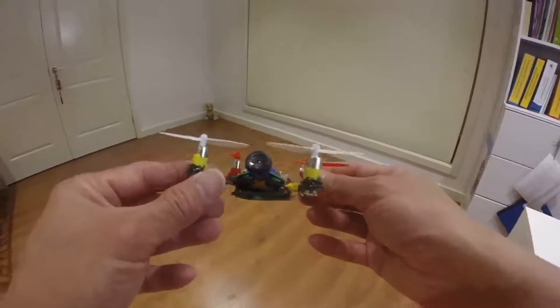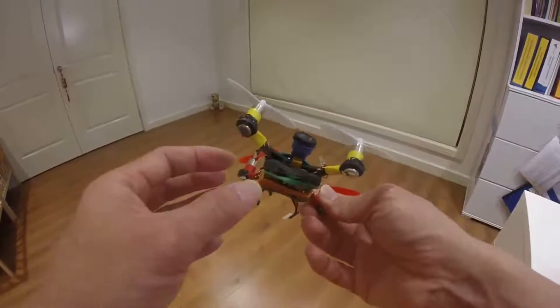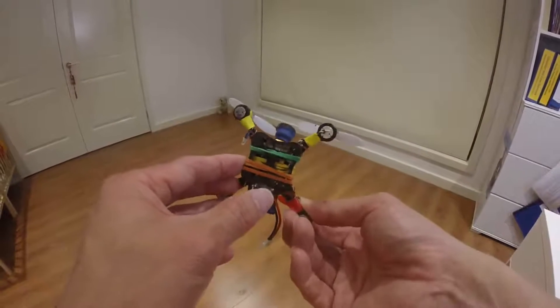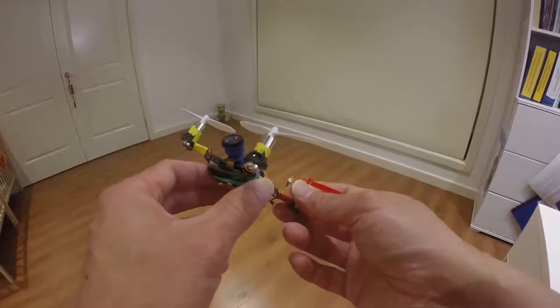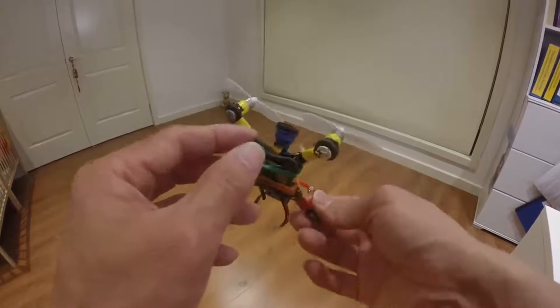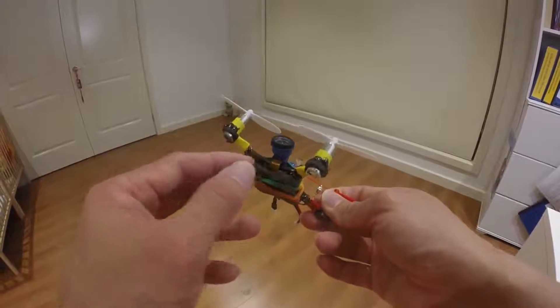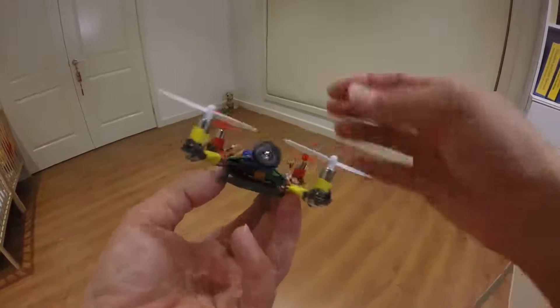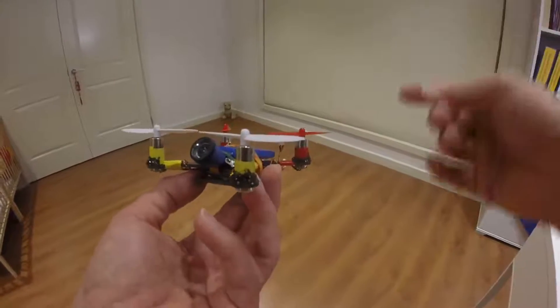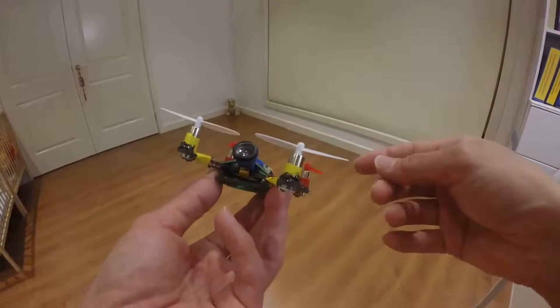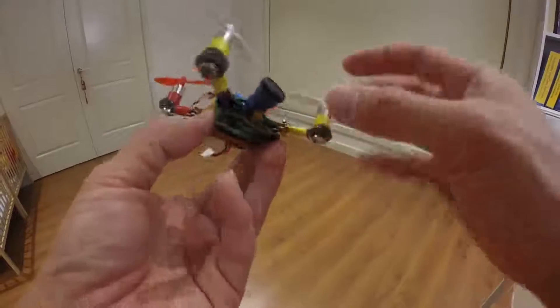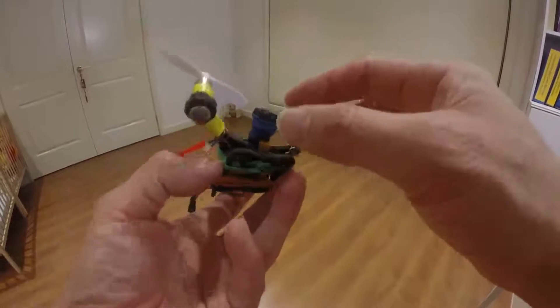This flight control board is from the Hubsan FPV. Unfortunately the camera is broken, so the camera doesn't work. But I just put them together because I just want to show this build to you guys.